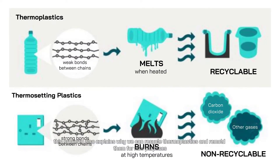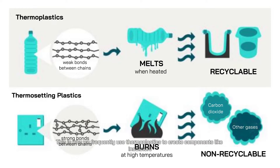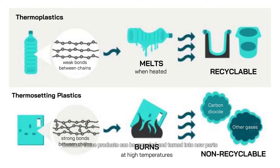Likewise, this property also explains why we can recycle thermoplastics and remold them for new purposes. Although thermoplastic polymers are strong, their bonds are weak, so we can basically reuse them indefinitely, making them highly recyclable compared to thermosets. This is why thermoplastics are frequently used to create components like insulators, pipes, and adhesives, because these products can be recycled and turned into new parts.